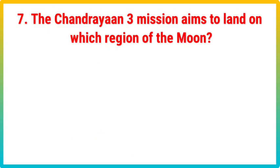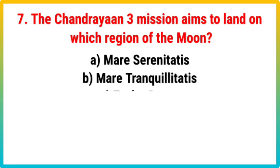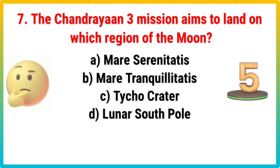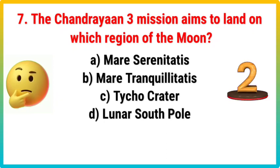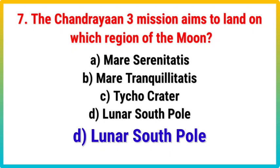Question 7. The Chandrayaan-3 mission aims to land on which region of the Moon? Your options: A. Mare Serenitatis, B. Mare Tranquillitatis, C. Tycho Crater, D. Lunar South Pole. Correct answer is D. Lunar South Pole.